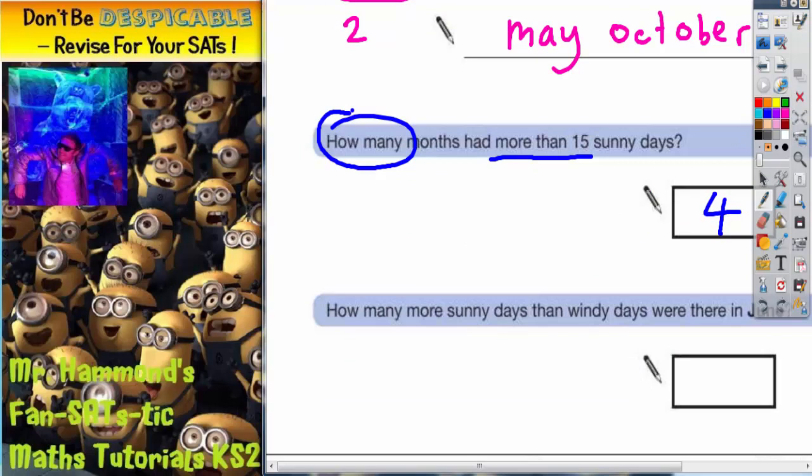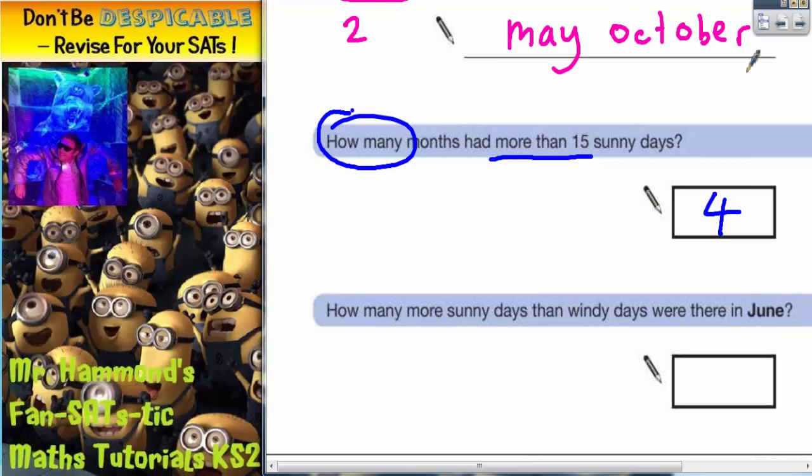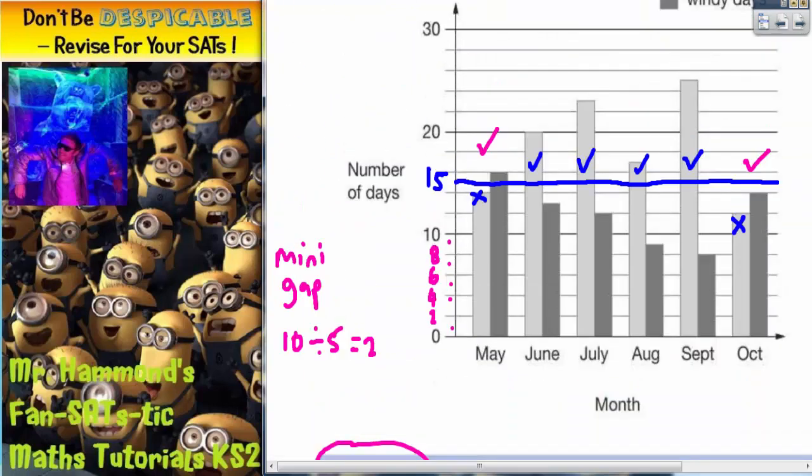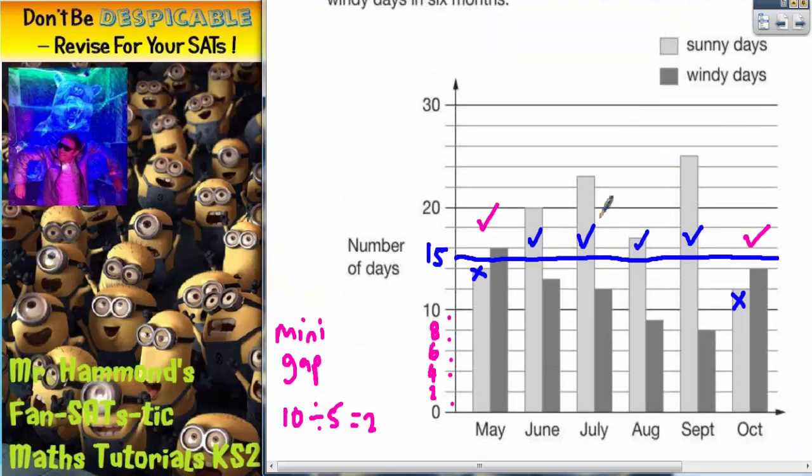How many more sunny days than windy days were there in June? So let's see what we can get from this. Well in June the light grey bar for sunny is level with 20. So there were 20 sunny days.